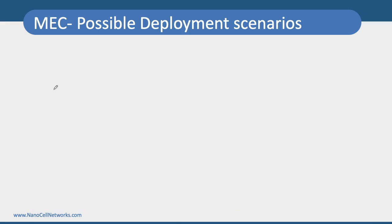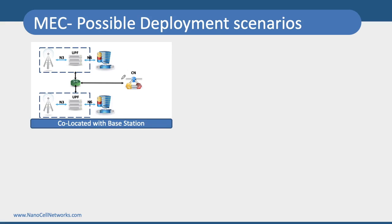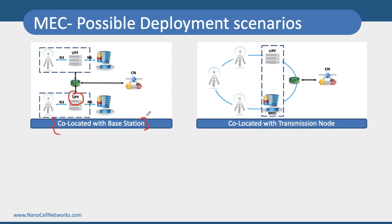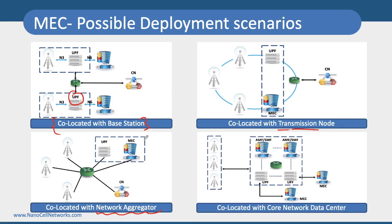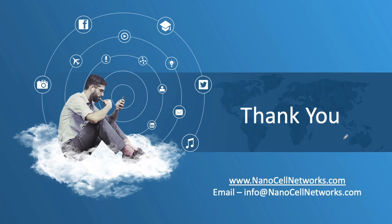There are different possible deployment scenarios for MEC. First, you can co-locate your UPF and MEC host at the same location as the base station. Second, the UPF and MEC control can be placed at a transmission node. Third, they can be placed at a network aggregator level. Finally, they can be kept near the centralized core network. So you have options: base station level, transmission node, network aggregator level, or a centralized network data center.